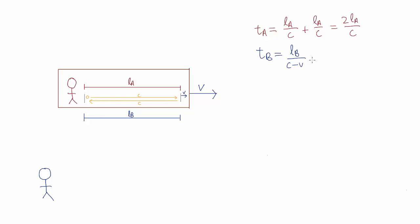On the way back, again, they're initially separated by LB, but the photon is moving to the left at speed C, and the mirror is moving towards it at speed V. And so the time taken is LB over C plus V.